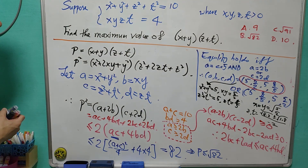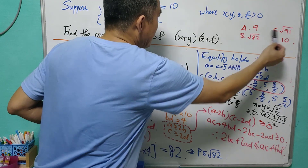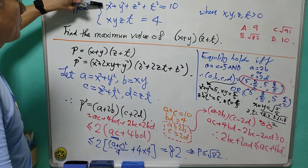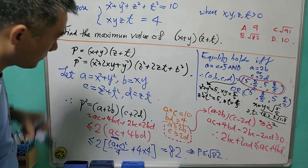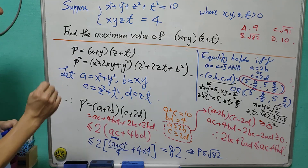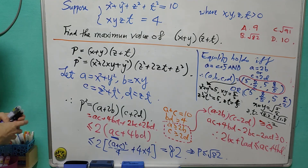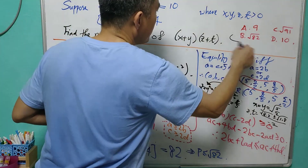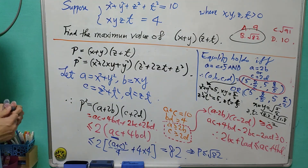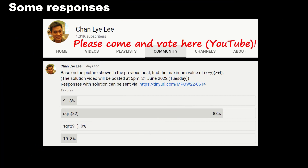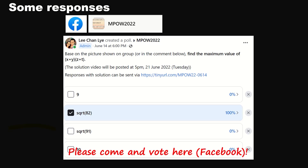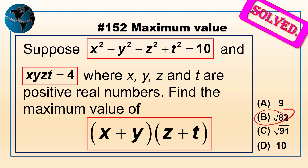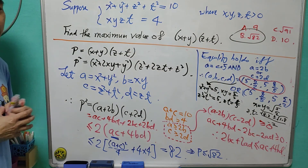This question is quite tricky. From the first attempt, many people will choose d by only looking at the first condition, forgetting to check the second condition. With nice integer values, we can get p = 9, but that is still not good enough. After some routine calculation, the answer is b) √82. That's all for today's lesson — see you again next Tuesday.